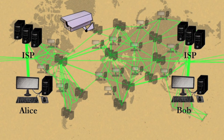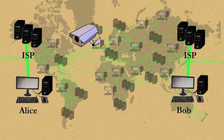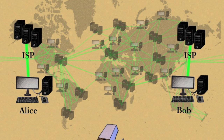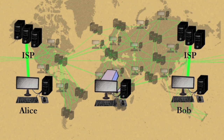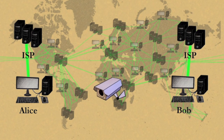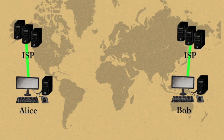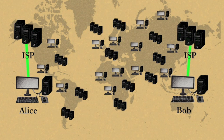It's easy to impersonate people online. Someone could pose as Alice or Bob and intercept their messages. Here's one way this can happen.